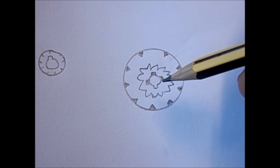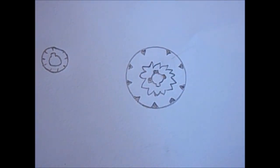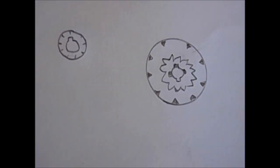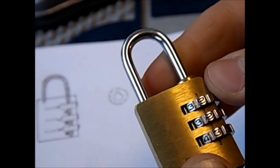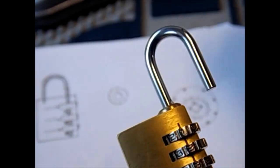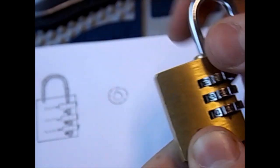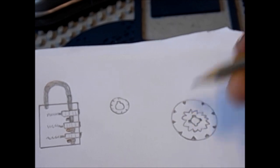And the inner wheel is what, the actual position of the inner wheel is what determines what number the shackle will open on. And so we'll remember here that to change the shackle, the combination rather, you have to push down the shackle. And what we're doing when we push down the shackle is we're disengaging the outer wheel from, or the inner wheel from the outer wheel.